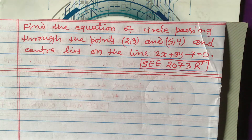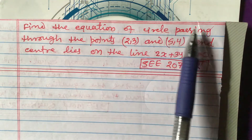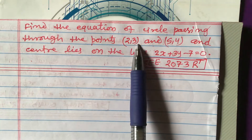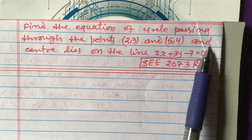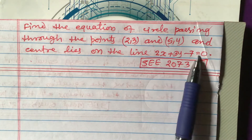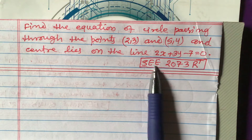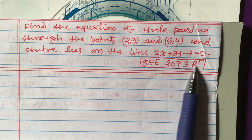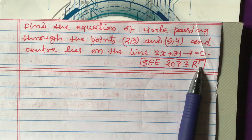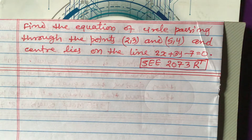Dear students, today I am going to teach you one question related to equation of circle of class 10 in coordinates. The question is: find the equation of circle passing through the points (2,3) and (5,4) and whose center lies on the line 2x + 3y - 7 = 0. This question was asked in SEE 2073 for the regular examination, for the regular examiner of optional 2.